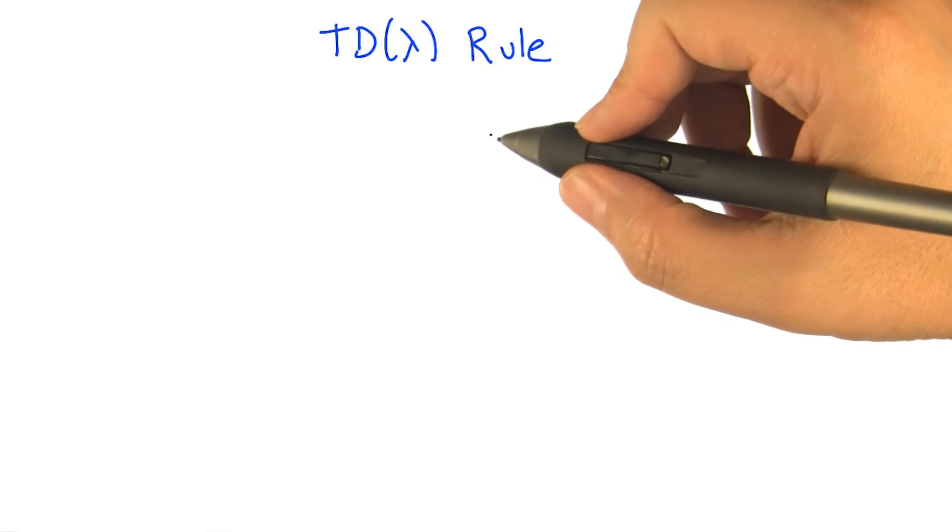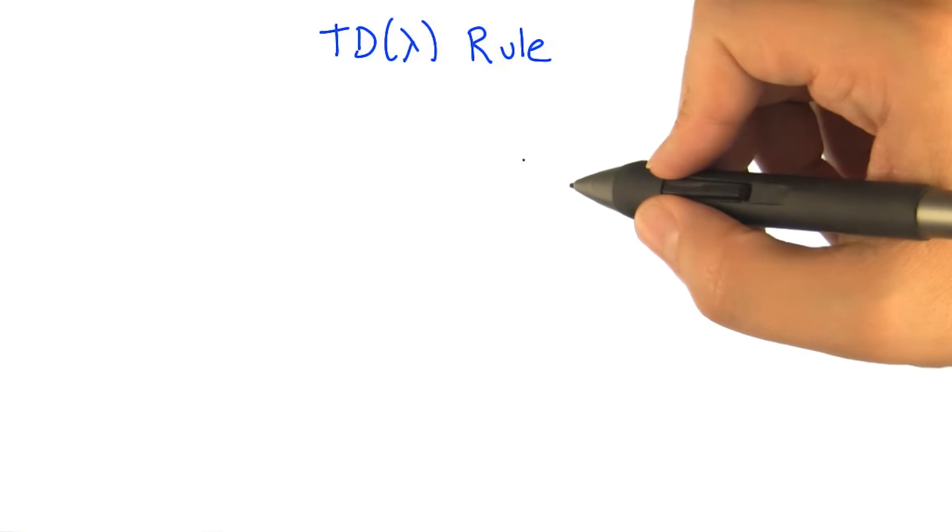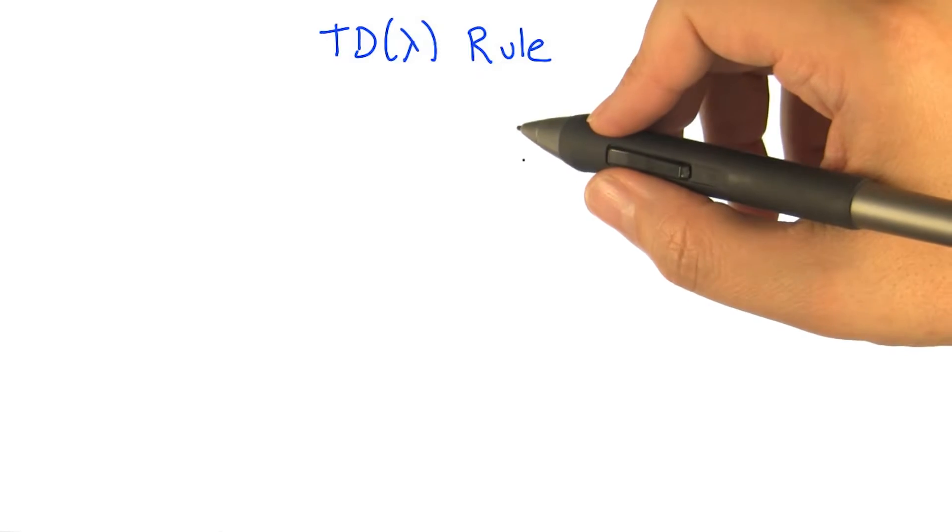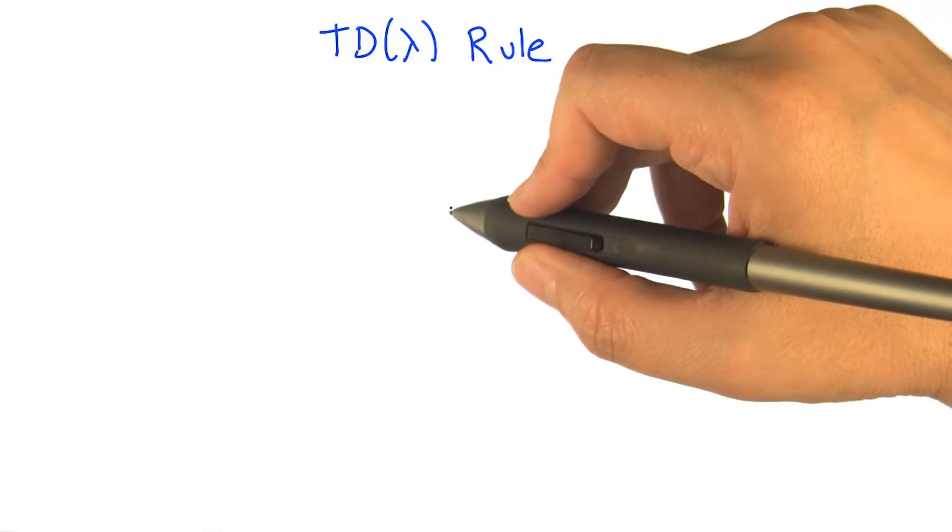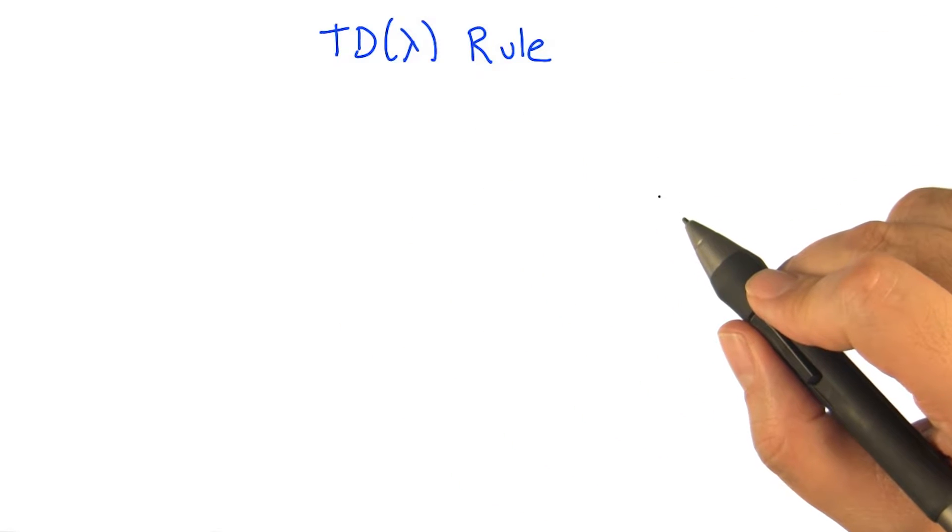So now we've talked about two different algorithms, TD(0) and TD(1). And what we'd like to do next is show that, in fact, there is a larger algorithm that actually includes both of those as special cases.